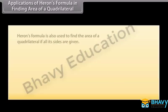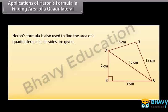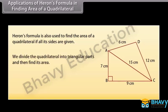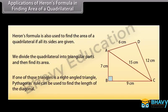Applications of Heron's formula in finding the area of a quadrilateral: Heron's formula is also used to find the area of a quadrilateral if all its sides are given. For that, we divide the quadrilateral into triangular parts and then find its area. If one of those triangles is a right-angled triangle, Pythagoras' rule can be used to find the length of the diagonal. Let us go through some examples.